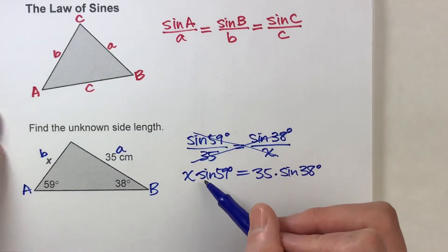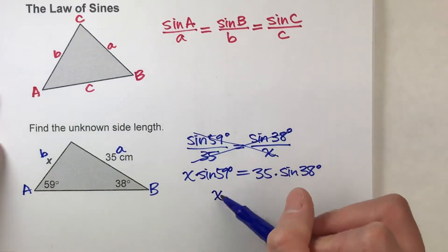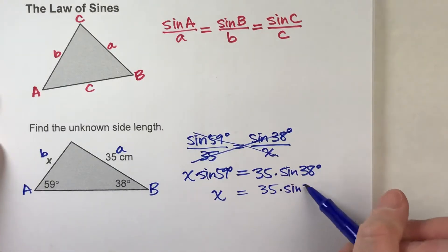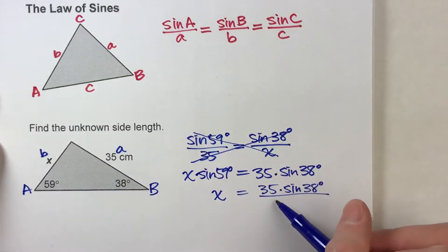To get x, I'm going to divide both sides by the sine of 59 degrees. When I do that, I end up getting this side divided by the sine of 59 degrees.